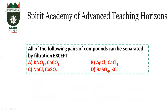All of the following pairs of compounds can be separated by filtration except? Dear students, filtration works when one compound is soluble and the other is insoluble. KNO₃ and CaCO₃ — KNO₃ is soluble, calcium carbonate is insoluble. AgCl and CaCl₂ — AgCl is insoluble. However, NaCl and CuSO₄ are both highly soluble. If both are soluble, filtration is not possible. This answer is C.